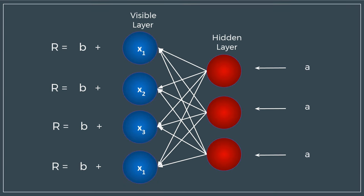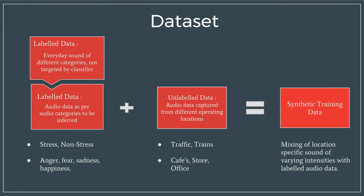The input is reconstructed using the weights, which are a transposed form of those used to extract the features. To prepare the dataset for supervised training, unlabeled data from various background locations is mixed with the labeled dataset. Thus, each labeled audio spans various background environments.